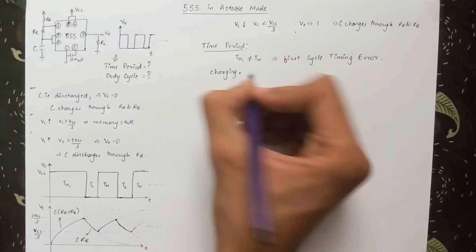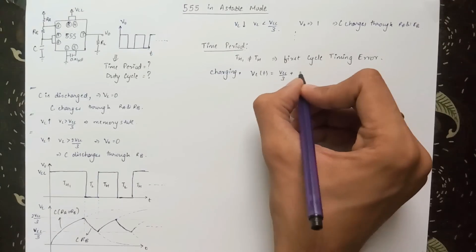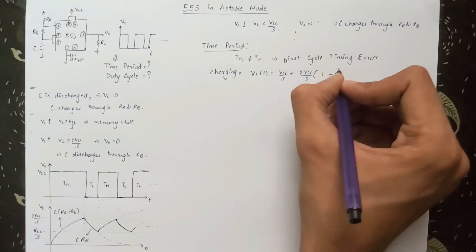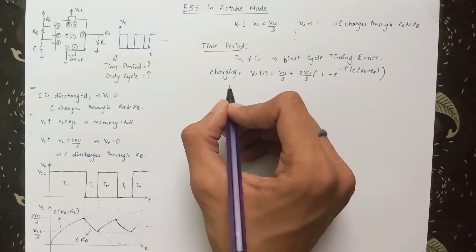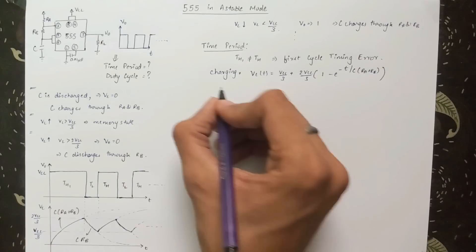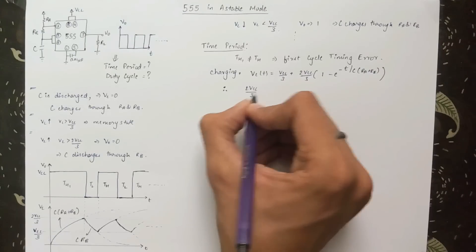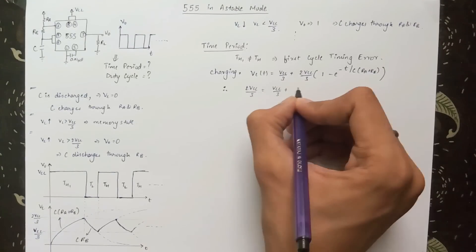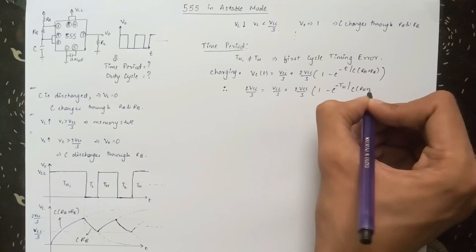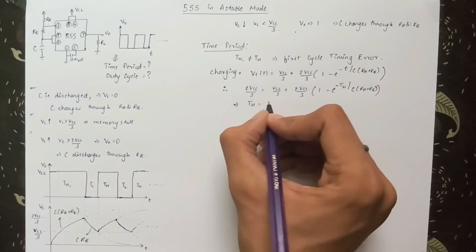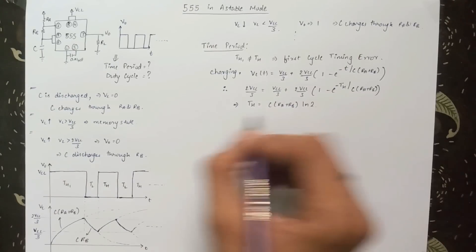Let's start with the analysis. The equation for charging of the capacitor can be written as VC(t) equals Vcc by 3 plus 2Vcc by 3 times 1 minus e to the power minus t upon C times RA plus RB. TH is given as the time taken to reach 2Vcc by 3. Therefore, 2Vcc by 3 equals Vcc by 3 plus 2Vcc by 3 times 1 minus e to the power minus TH upon C times RA plus RB. Solving this equation gives TH equals C times RA plus RB times ln 2.